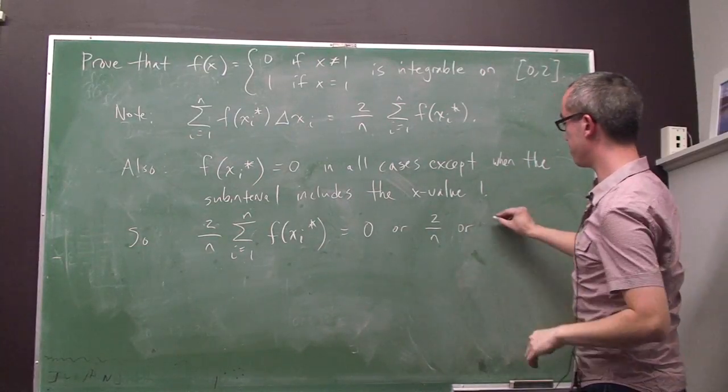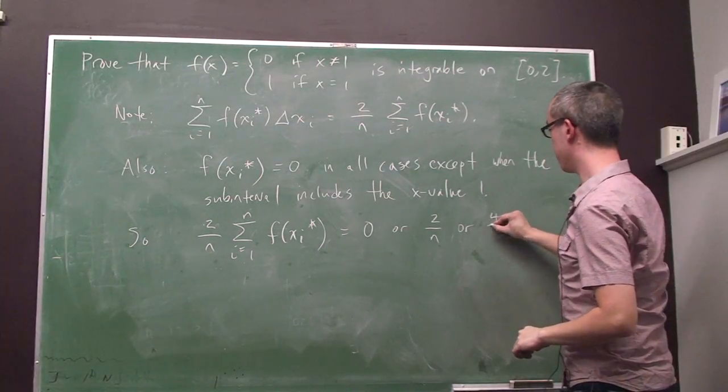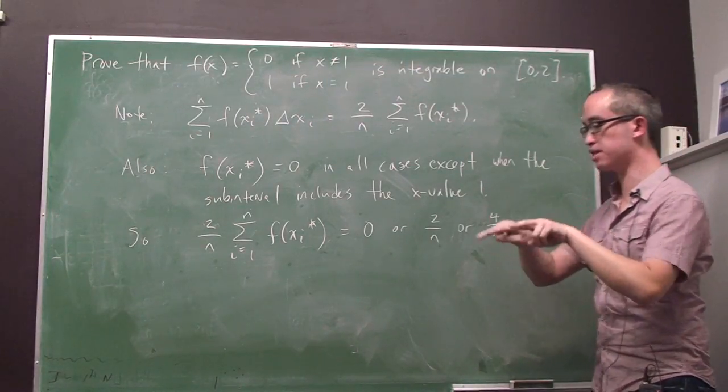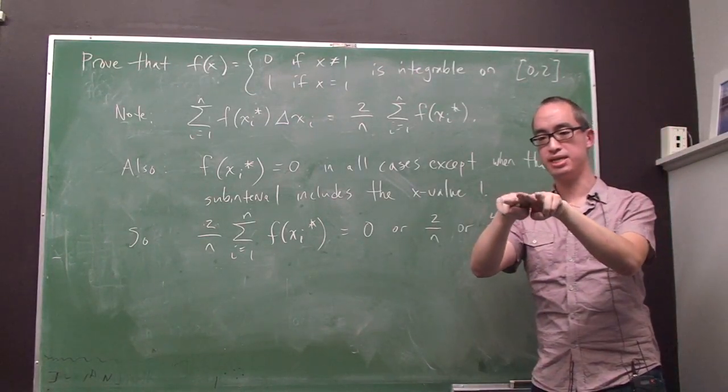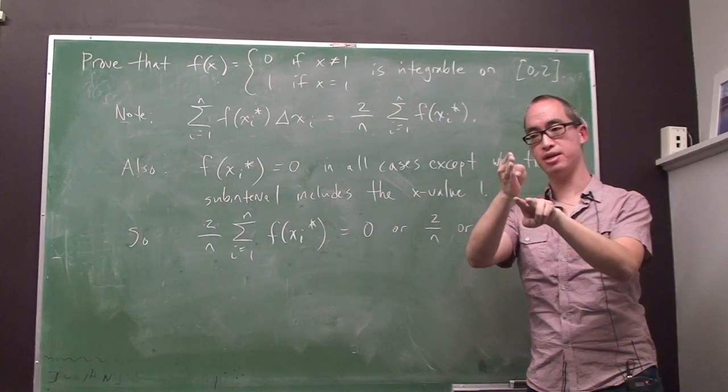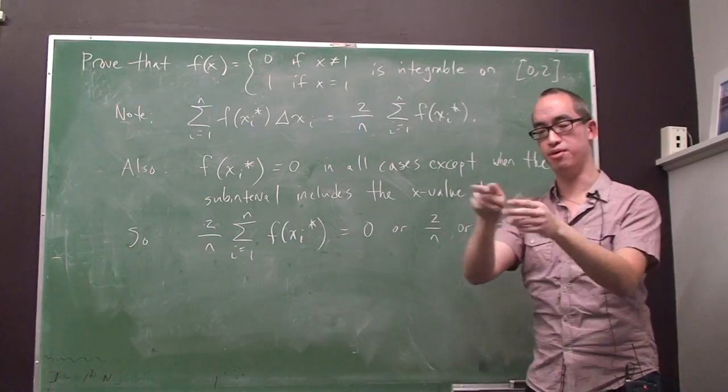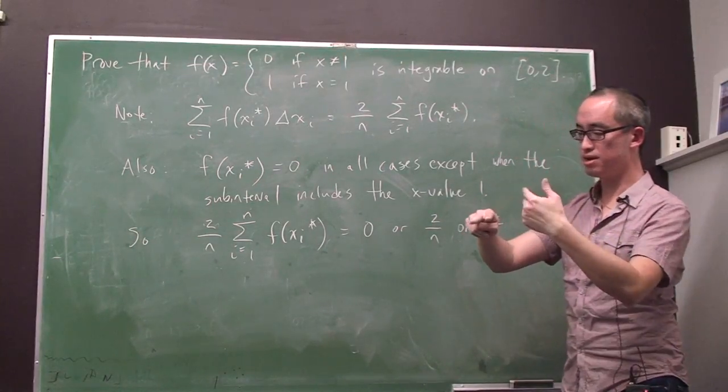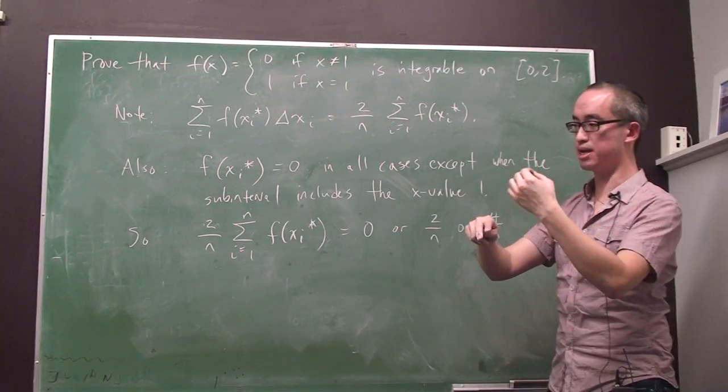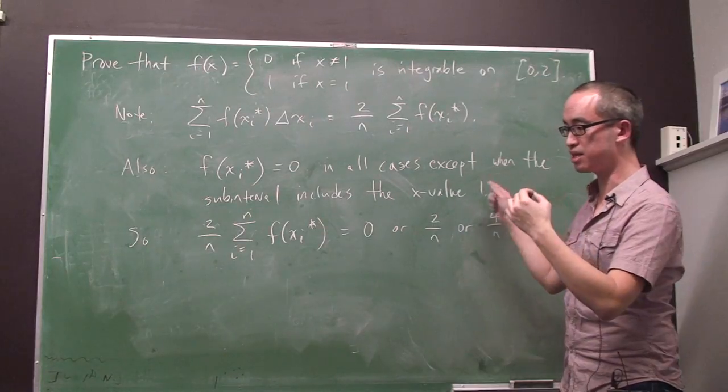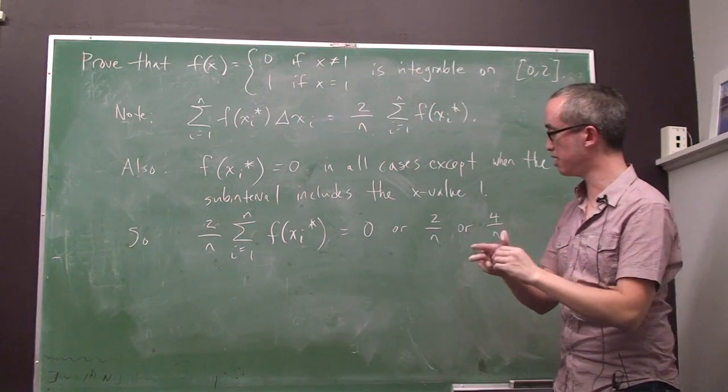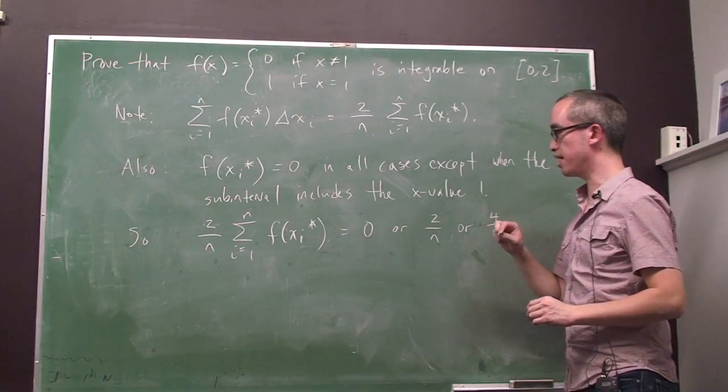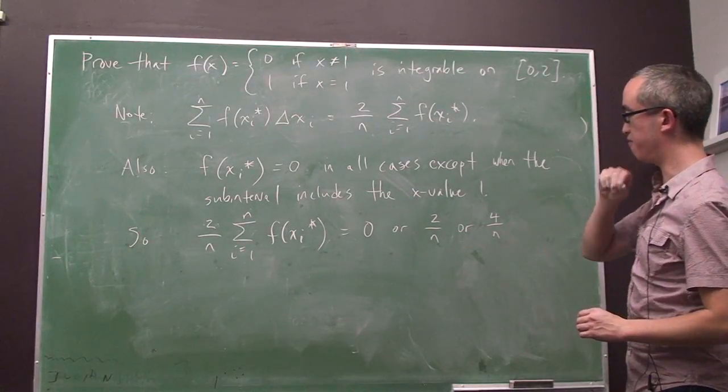Or, and this one's a bit of a subtle point, it could actually be 4 over n. Imagine that we have 2 subintervals that are side by side, and the endpoint, so the right endpoint of 1 and the left endpoint of the other is 1. If that's the case, then we could conceivably pick a sample point, a sample x value of 1 for 2 subintervals. And in that case, we would get 2 contributions of 2 over n, and a total contribution of 4 over n.